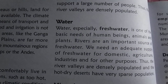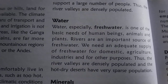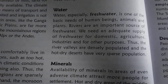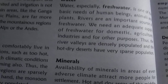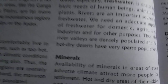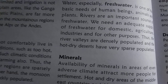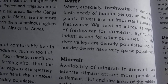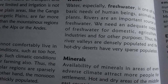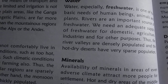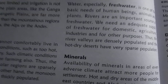Water: fresh water is also one of the basic needs of human beings, animals, and plants. That's why all settlements during the historic period also occurred near rivers like the Indus, Gangetic, Yangtze, Nile, etc. People need an adequate supply of fresh water for domestic, agricultural, industrial, and other purposes. That's why river valleys are densely populated and hot dry deserts are sparsely populated.